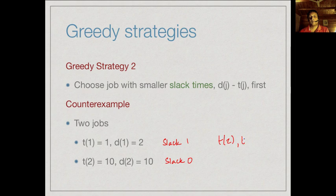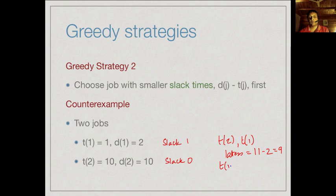If we pick job 2 followed by job 1, the lateness is 11 minus 2 because we first do t(2), so job 1 starts only at time 10 and finishes at time 11, but it should have finished by 2. So the lateness is 9. On the other hand, if we do job 1 followed by job 2, the lateness is just 1 because the second job should have finished at 10 but instead finishes at 11.